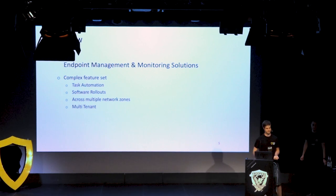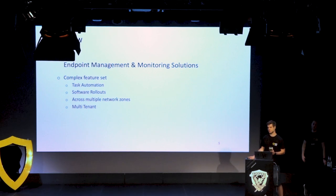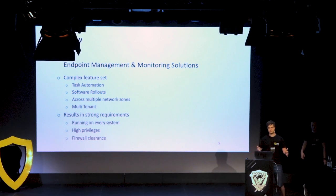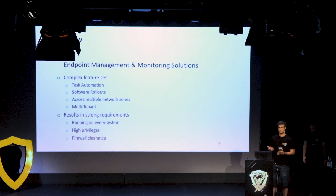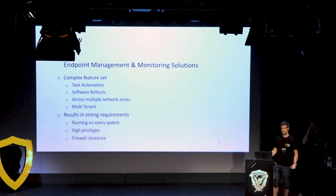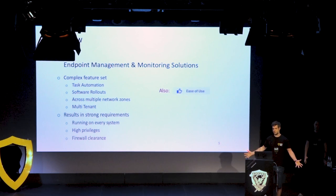What got us interested in these solutions was their complex feature set. Task automation, software rollouts, and all the tasks done across multiple network zones can be quite complicated, especially with multi-tenant capabilities. It also requires companies to do heavy things like running proprietary software — which we call agents — on all systems. Those agents run with high privileges because they manage the system, and they need firewall clearances to communicate with a central instance. And everyone promises this is also easy to use.